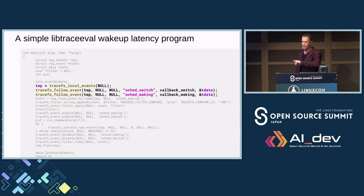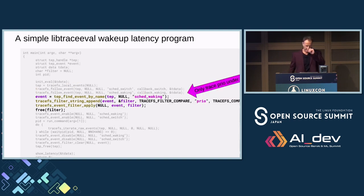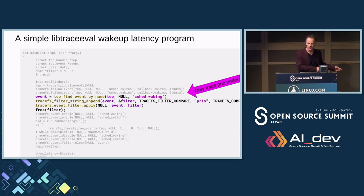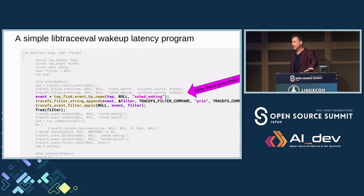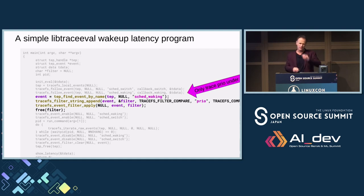I have two follow callbacks: one follows the sched_switch event when context switches happen, the other follows the sched_wake event. I also filter it — I'm only interested in real-time tasks with prio under 100. Inside the kernel, 0 to 99 is real-time tasks. I use TEP_FIND_EVENT (anything with TEP prefix is a libtraceevent thing), find the sched_waking event handle, and apply a filter string for prio less than 100.